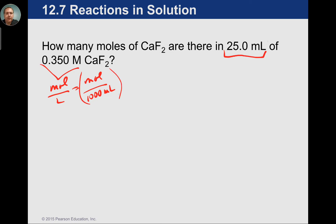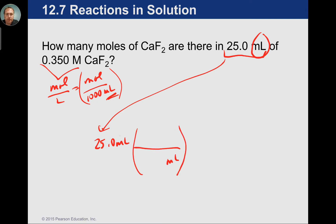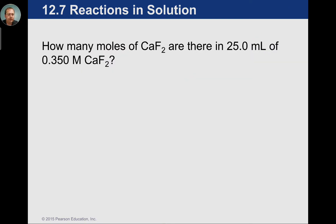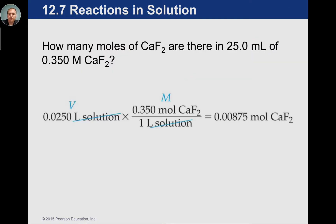Let's warm up with a molarity problem: moles of calcium fluoride given 25 mL of solution. We put 25 milliliters out front, cancel milliliters using 1000 mL per liter, then use capital M of 0.350 moles on top. This gives us moles — exactly what we want. The textbook converts to liters first, but using 1000 mL avoids that extra step.